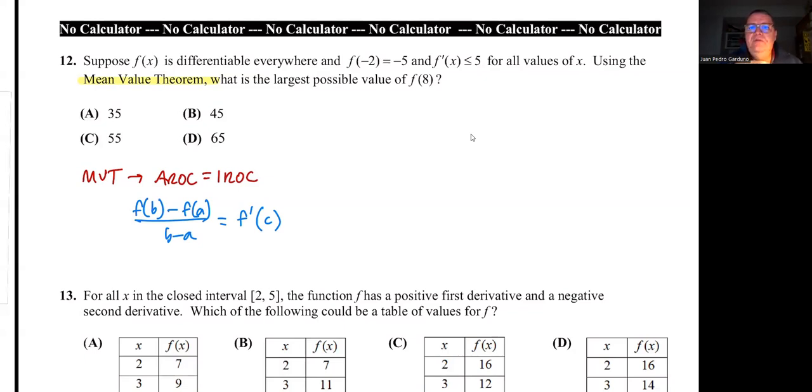If we think about what the x values that we have are, those values are -2 and 8. So the interval goes from -2 to 8. That's my a and b. So I can write that f(8) - f(-2) over 8 - (-2). That should be less than or equal to 5 because they told me that the slope is always less than or equal to 5.